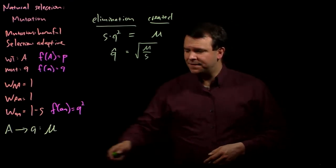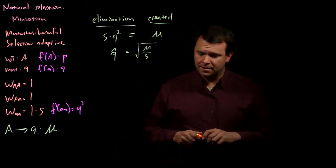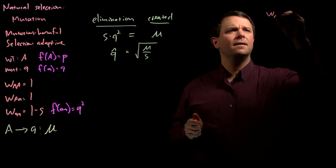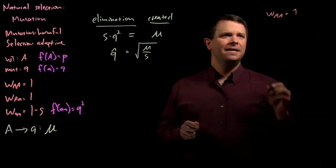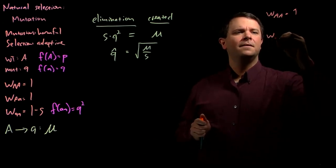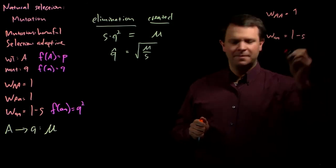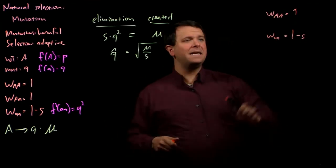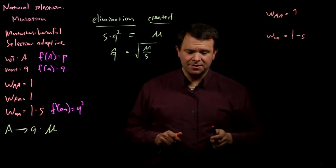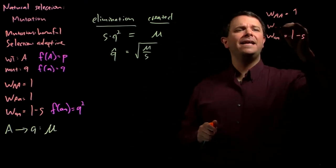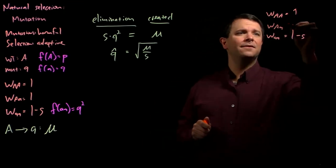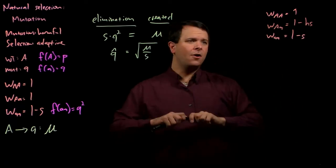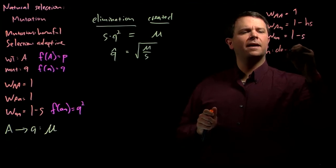What happens if it's only partially recessive? In a partially recessive situation, the fitness of big A, big A is still 1. The fitness of little a little a is still 1 minus S. But the heterozygote will have some loss of fitness, but not as much as the homozygous recessive. We say that the heterozygote fitness is 1 minus HS.